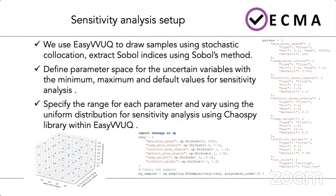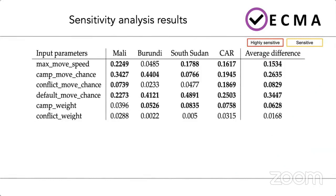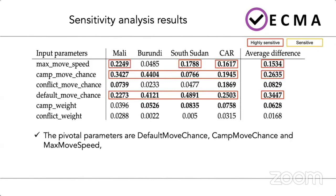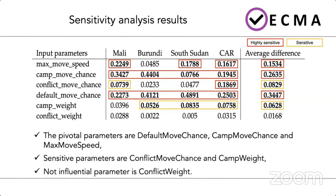After submitting our simulations, we obtained sensitivity analysis results for six input parameters across four African conflicts: Mali, Burundi, South Sudan, and Central African Republic. The results identified that default move chance, camp move chance, and max move speed are the pivotal parameters, while conflict move chance and camp weight are sensitive parameters. The conflict weight did not have any influence on our validation output.